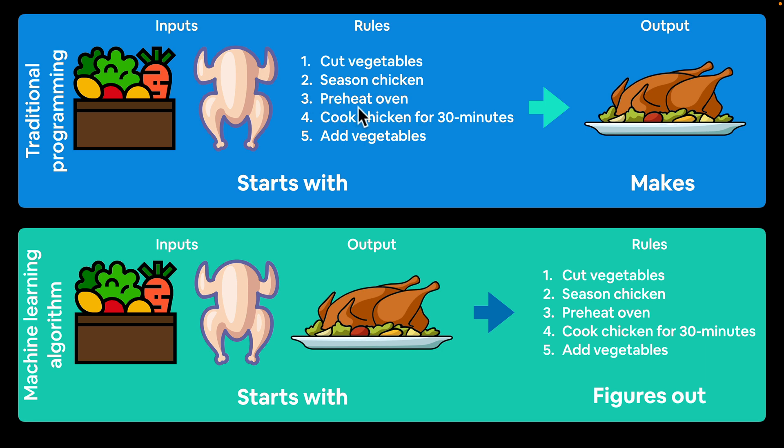You might write down some rules. This could be your program. Cut the vegetables, season the chicken, preheat the oven, cook the chicken for 30 minutes and add vegetables. It might not be this simple, or it might actually be because your Sicilian grandmother is a great cook. Those inputs combined with those rules makes this beautiful roast chicken dish. That's traditional programming.